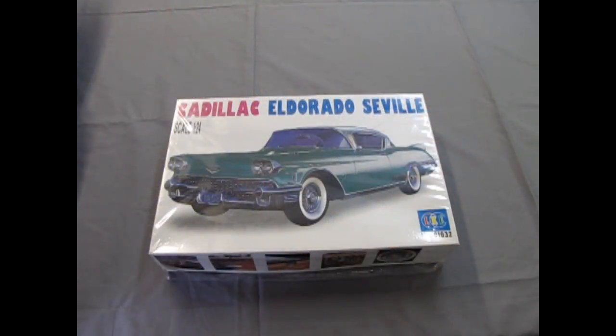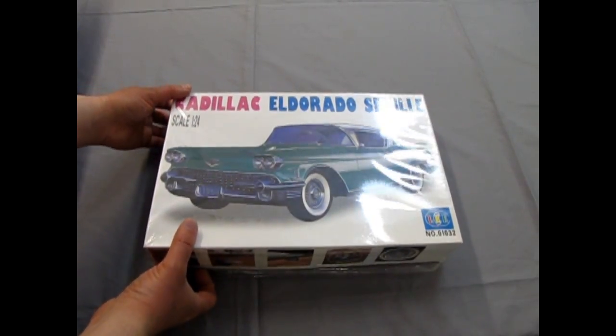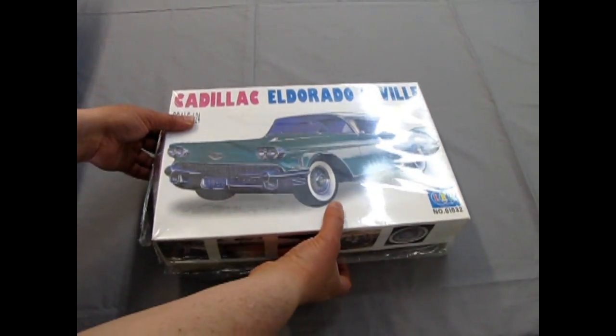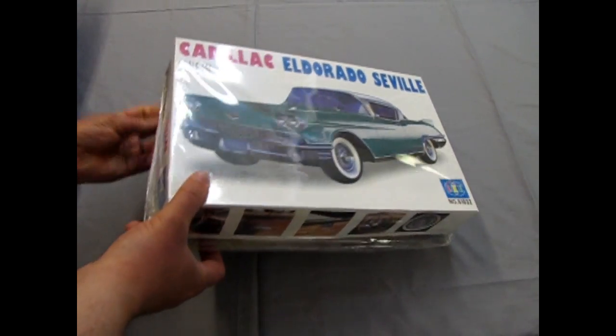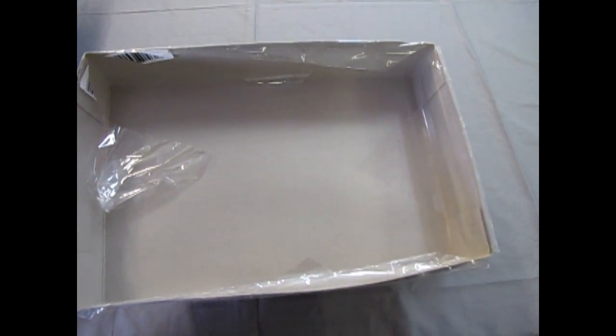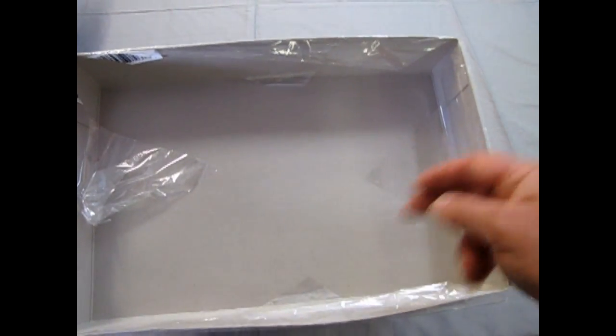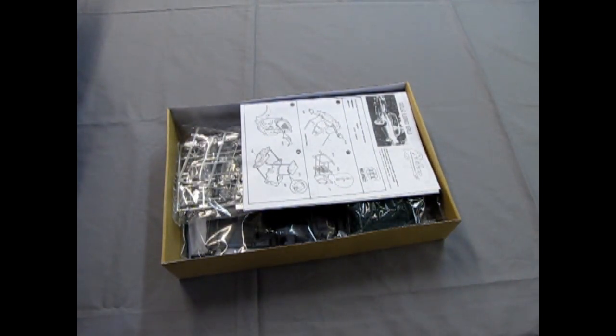And now we're going to take the lid off the 1958 Cadillac Eldorado Seville by Lee. One second. Get around the plastic here. There we go. This is another one that my dad gave to me and cut the plastic and folded it in just to protect the sheen on the box.